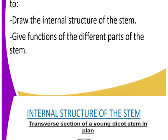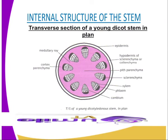Now we are going to look at the internal structure of the stem. As you can see from our diagram, that is the diagrammatic representation of the dicotyledonous stem. As you can see, we have several parts starting from the epidermis, which is the outermost part, followed by the sclerenchyma, parenchyma, xylem, phloem, cambium, cortex parenchyma, and the medullary rays.